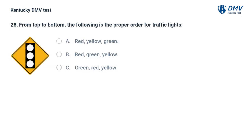From top to bottom, the following is the proper order for traffic lights: A. Red, yellow, green. B. Red, green, yellow. C. Green, red, yellow.